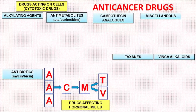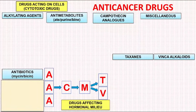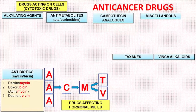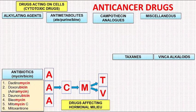Let us now start populating the individual drugs under each category. First we will populate the drugs under antibiotics. We will observe that all the drugs in this group end with the letters -mycin (M-Y-C-I-N) or -bicin (B-I-C-I-N). So we have Dactinomycin, Doxorubicin, Daunorubicin, Bleomycin, Mitomycin-C, and Mitoxantrone. Mitoxantrone is an exception in that it does not end with -mycin or -bicin.